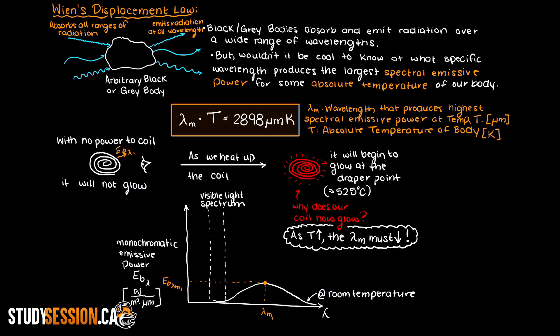Therefore as the temperature in our coil or any object for that matter increases, the curve will get displaced to the left, that is to shorter wavelengths, and upwards towards higher emissive powers. Well this makes sense right?